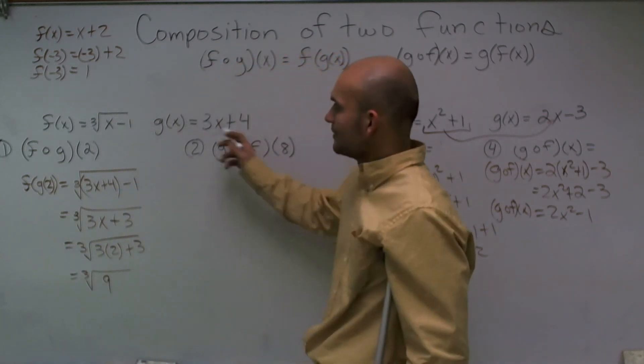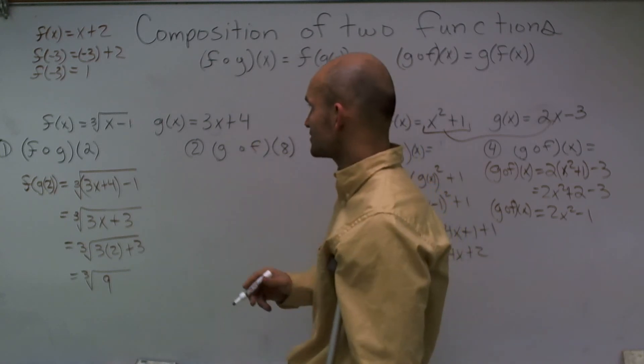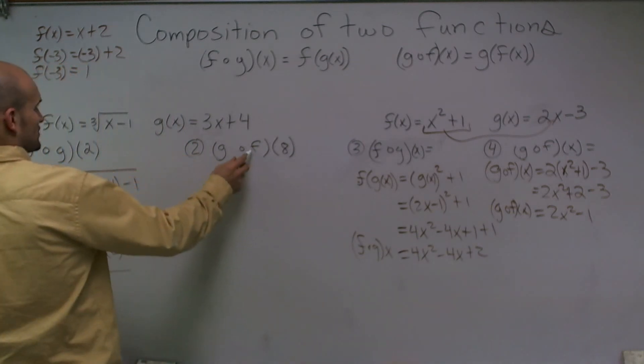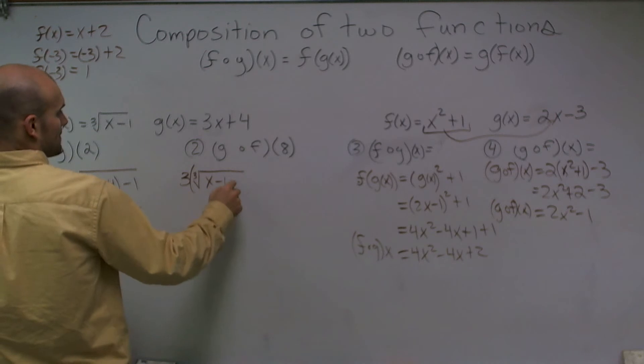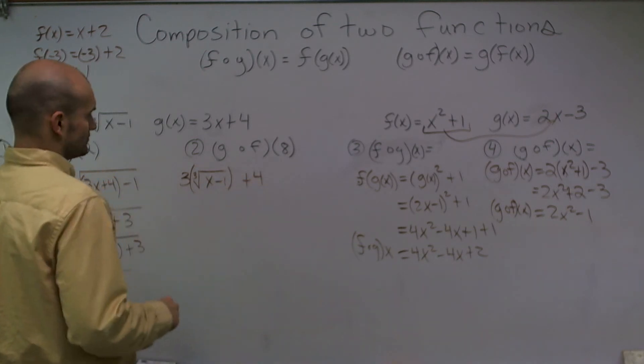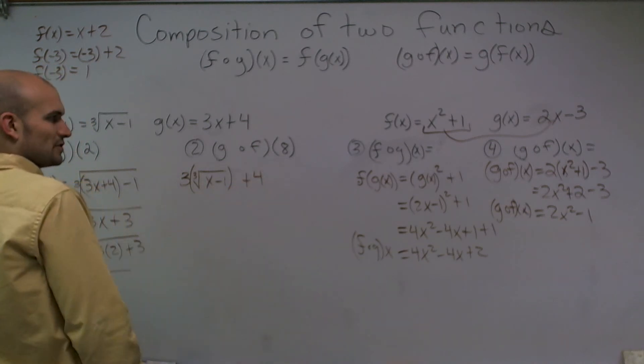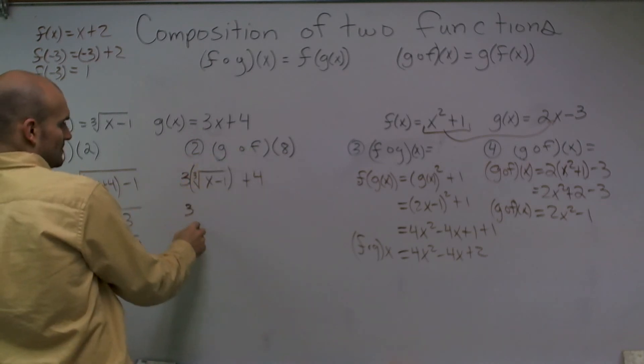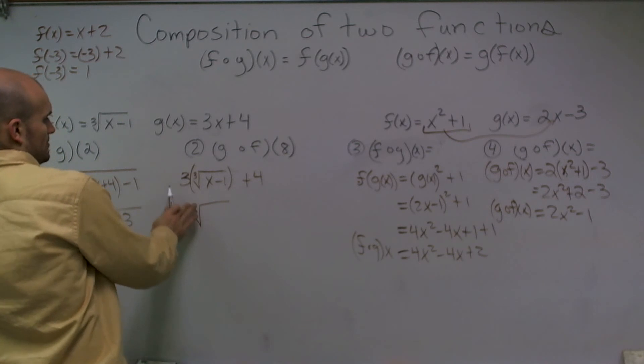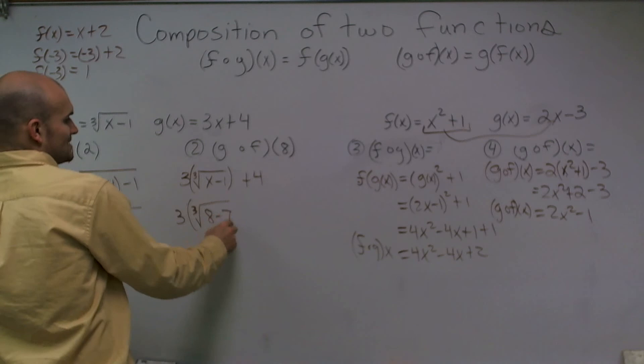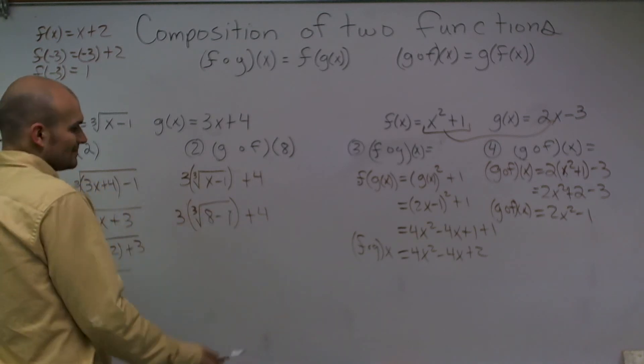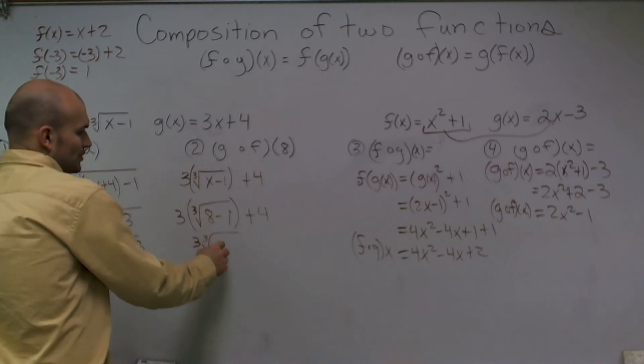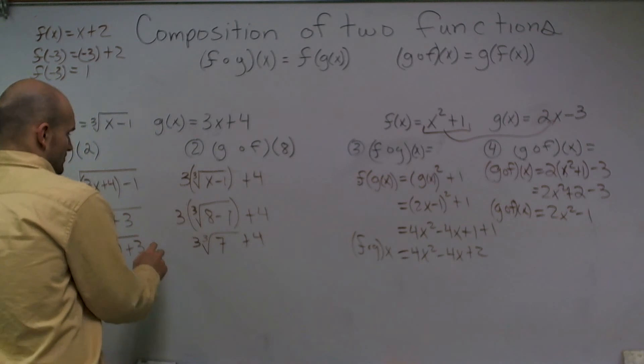So now what I'd like to do is let's do the g of f of x. So what happens if I plug in my f function into my g of x function? So I'm going to have 3 times the cube root of x minus 1 plus 4. I can't really simplify this any further, so I can go ahead and evaluate it for 8. So I have 3 times ∛(8-1) plus 4. 8 minus 1 is going to give me 7. So I have 3 cube root of 7 plus 4.